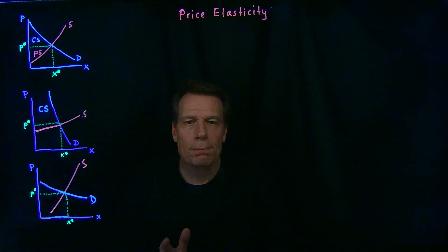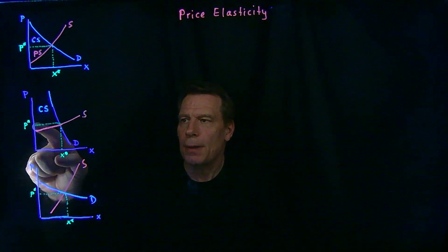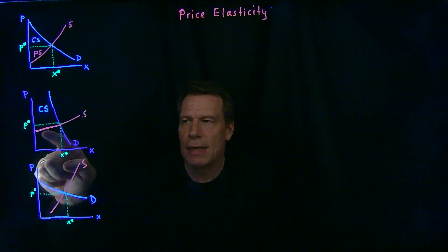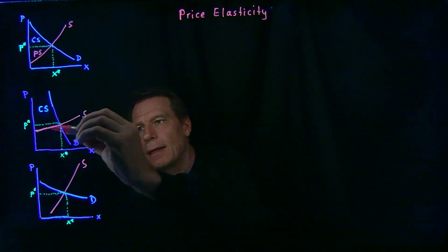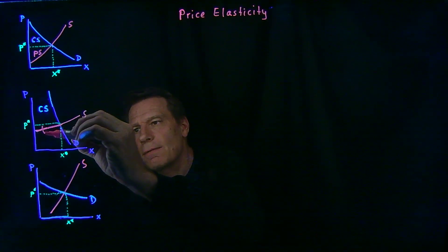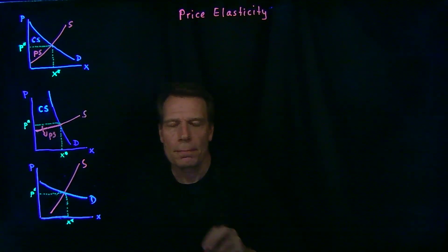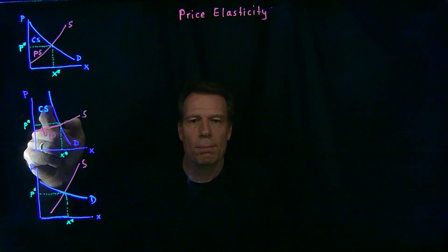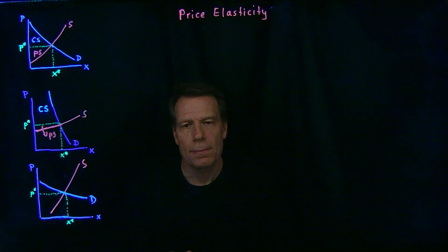We'd find producer surplus by going below the equilibrium price down to the supply curve, and we'd get this very small producer surplus area. So now we have consumer surplus much bigger than producer surplus.